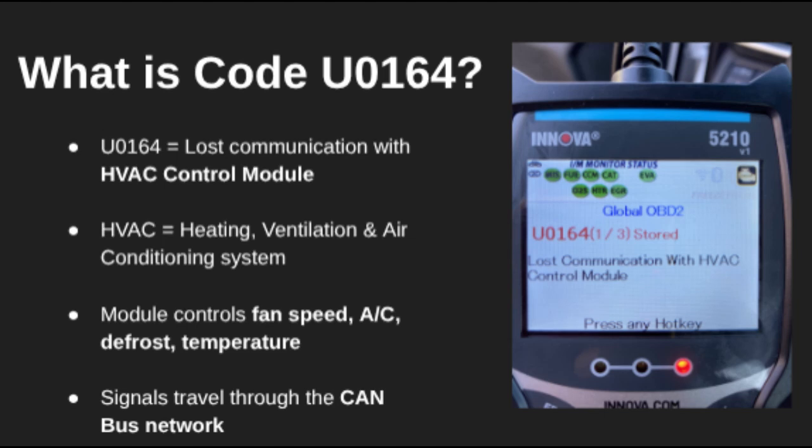Hey everyone, welcome back. Today we're breaking down DTC code U0164, which means your vehicle has lost communication with the HVAC control module. This module controls your heating, air conditioning, defroster, and fan speed, so when it goes offline, you're going to notice.